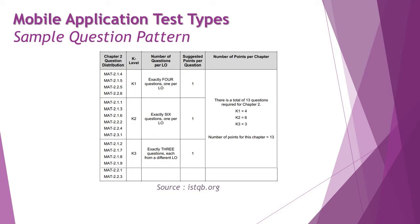That's the good news — we have 13 questions from Chapter 2, including K1, K2, and K3. K3 questions are three, K1 will be four, and K2 will be six. Different topics have different distributions, so you can gauge how much effort you need to put on each topic. Putting it all together, 13 questions from this chapter is a great contribution out of 40 — almost one fourth of your examination will come from here.